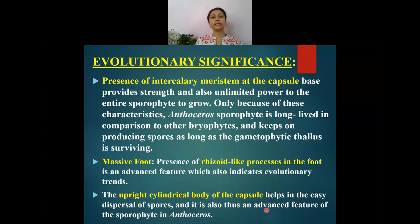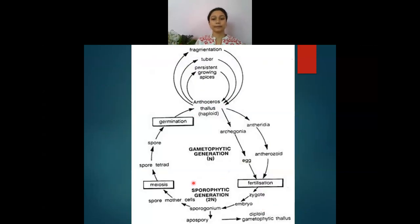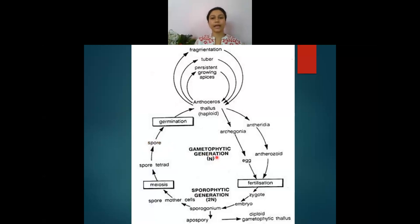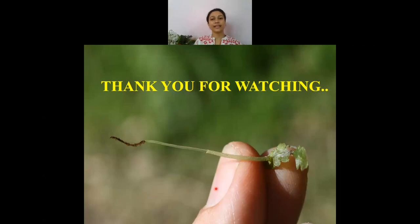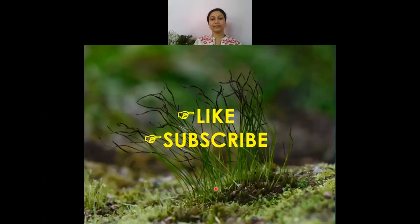These peculiar characters make the Anthoceros sporophyte evolutionarily and biologically very significant among the bryophytes. In the overall life cycle, the gametophytic generation is bigger compared to the sporophytic generation. The zygote is the first cell of the sporophytic generation, and the spores represent the first stage of the gametophytic generation. These two generations alternate to continue the life cycle of Anthoceros. Thank you for watching — if you found this helpful, please like and subscribe.